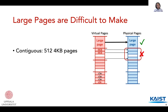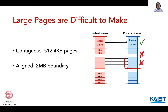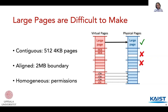Large pages can only be made when they are aligned to 2MB boundaries. The figure shows a contiguous region, but it does not meet the alignment requirement. Finally, all pages that make up the large page must have the same homogeneous permissions. The figure shows the last page having a different permission, preventing large page allocation.